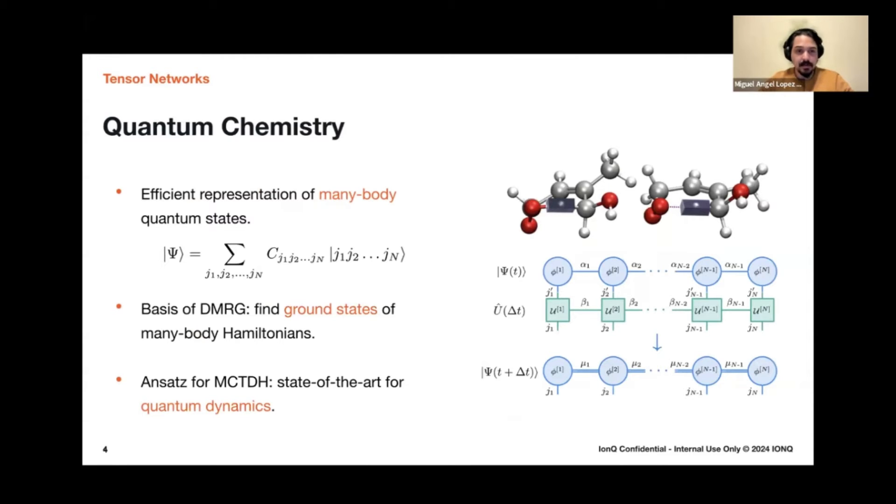Now, they also have an application for quantum chemistry because they are basically developed as efficient representation of many body quantum states. So as you might know, a quantum state, it's written as a very large tensor of complex coefficients. So the number of coefficients basically scales exponentially with the number of particles that you have. So if you have a very nice or easy representation of that coefficient tensor, then you can actually manipulate and do stuff with those quantum states.